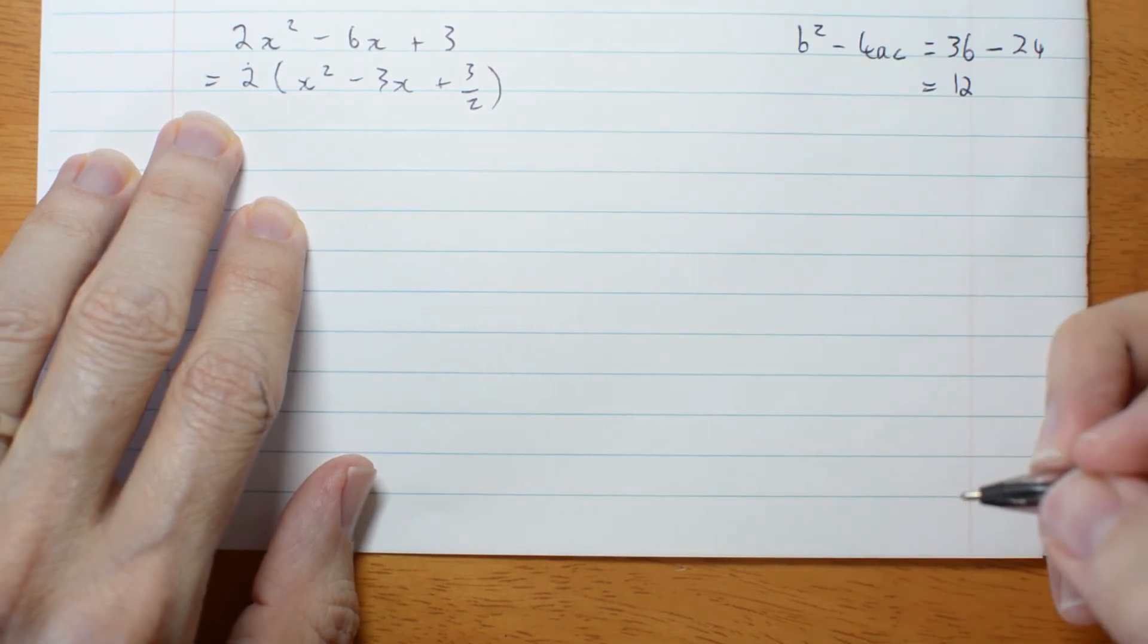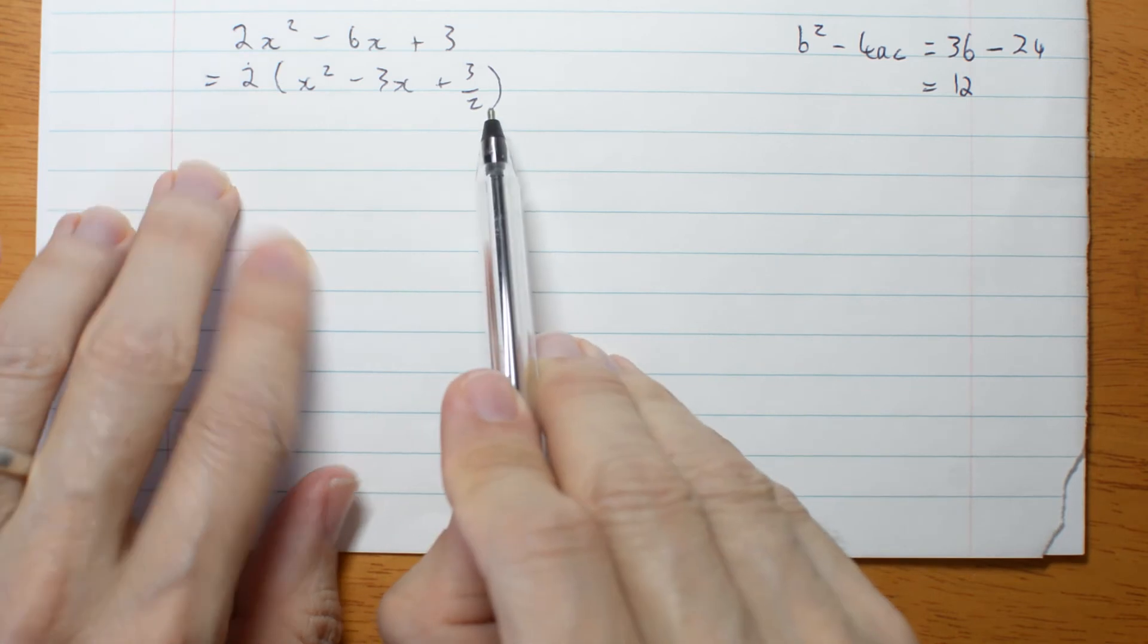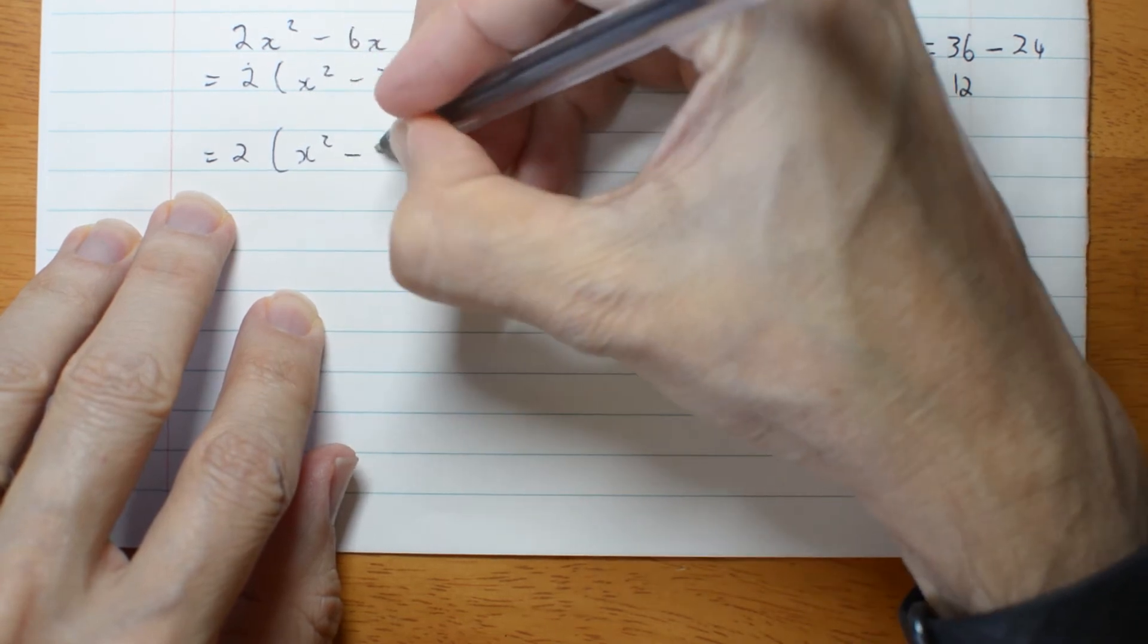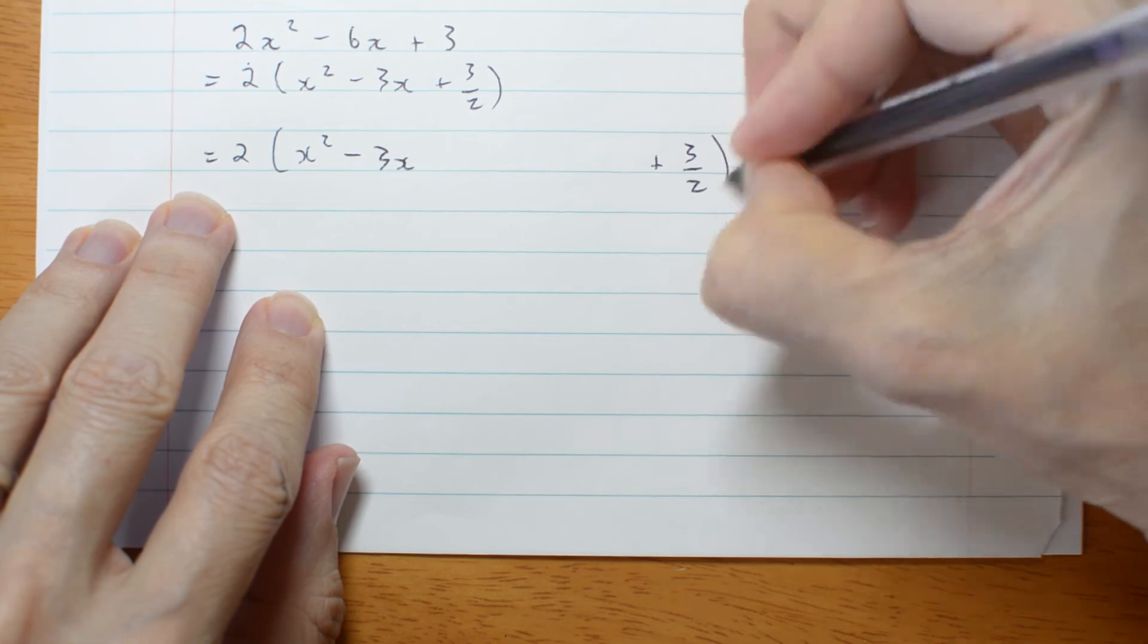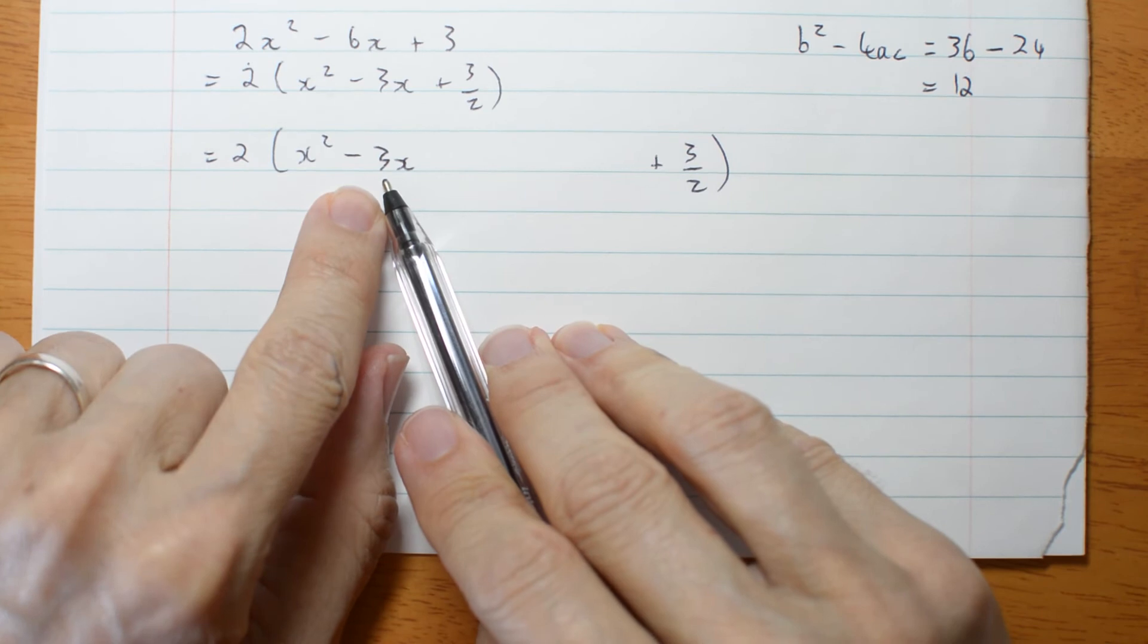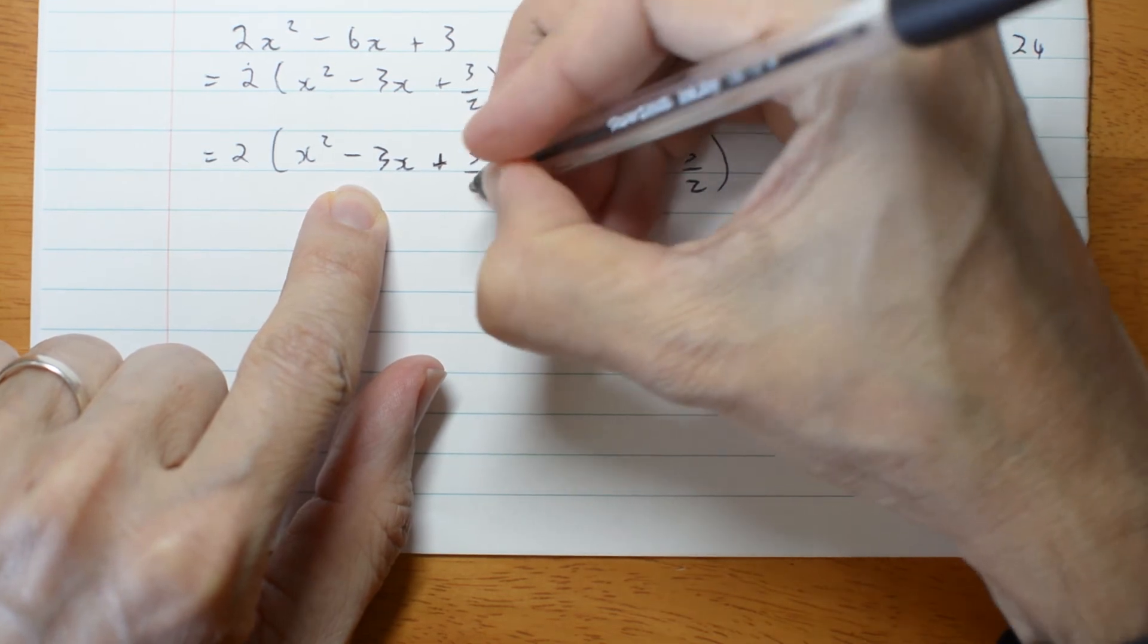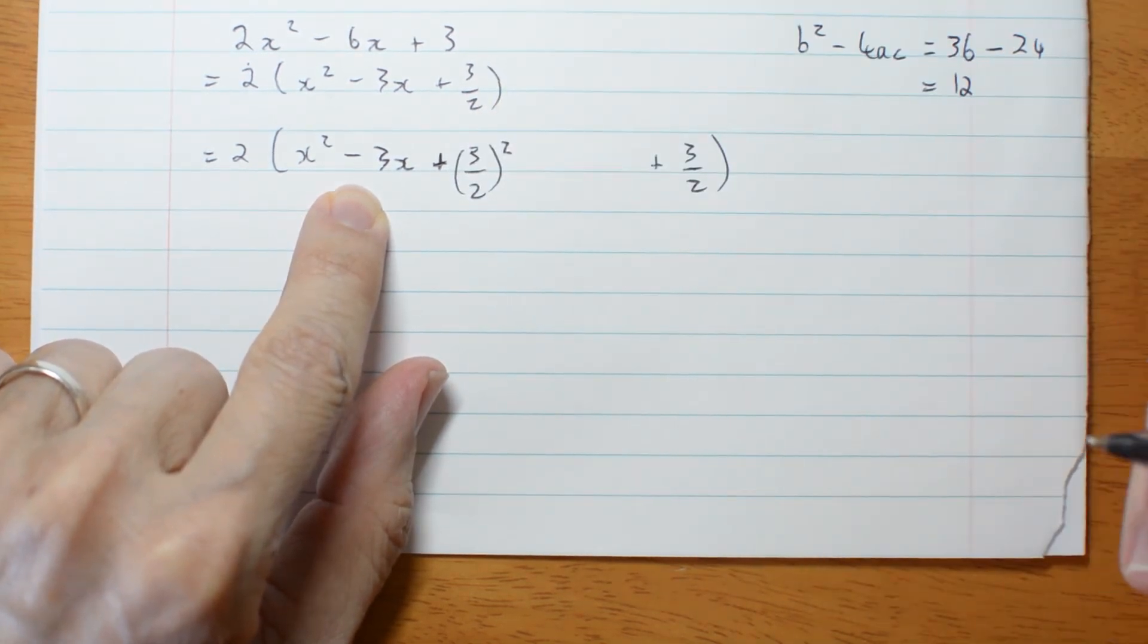Take the factor of 2 out so it's monic. Now let's complete the square. x squared minus 3x, leave a big space, plus 3 on 2. In that space I'm going to complete the square. I need half of this squared.